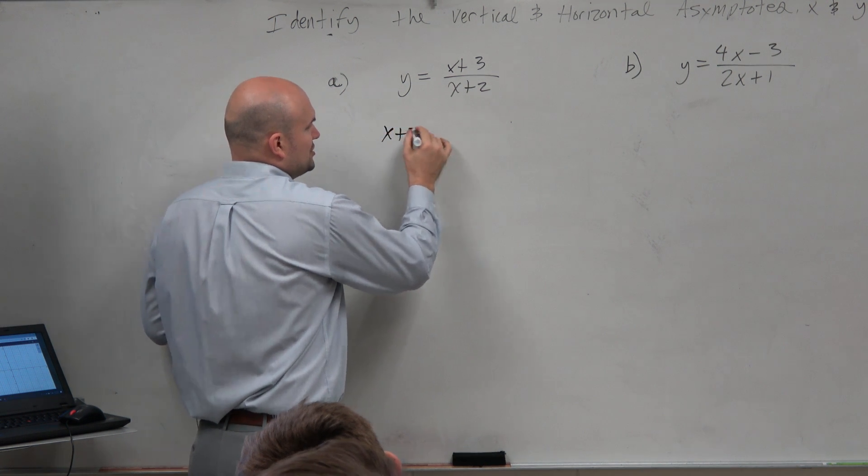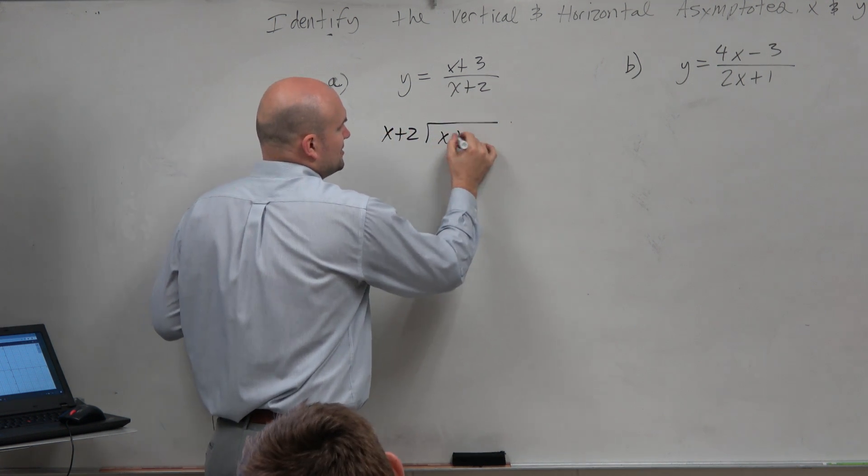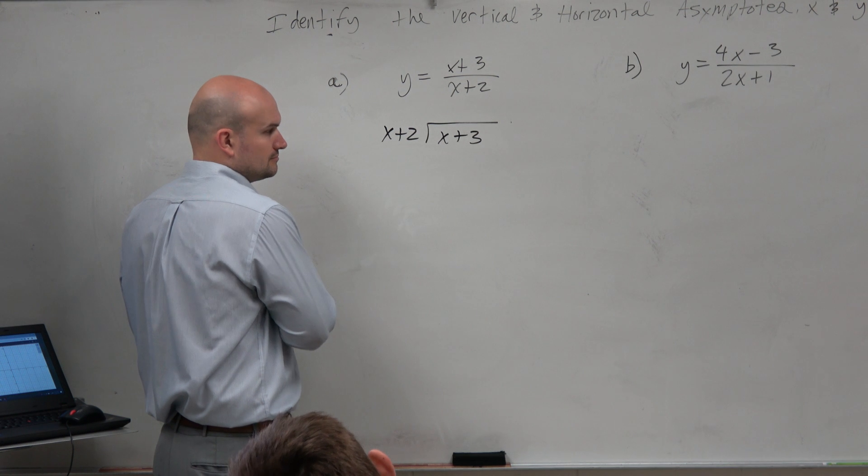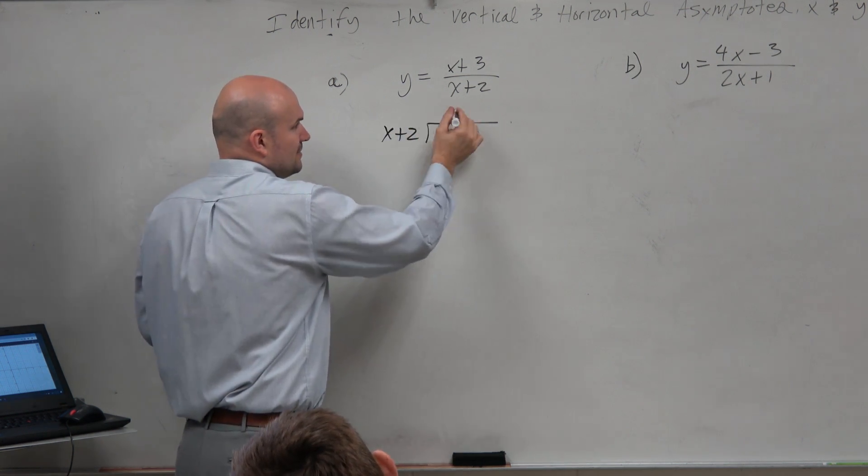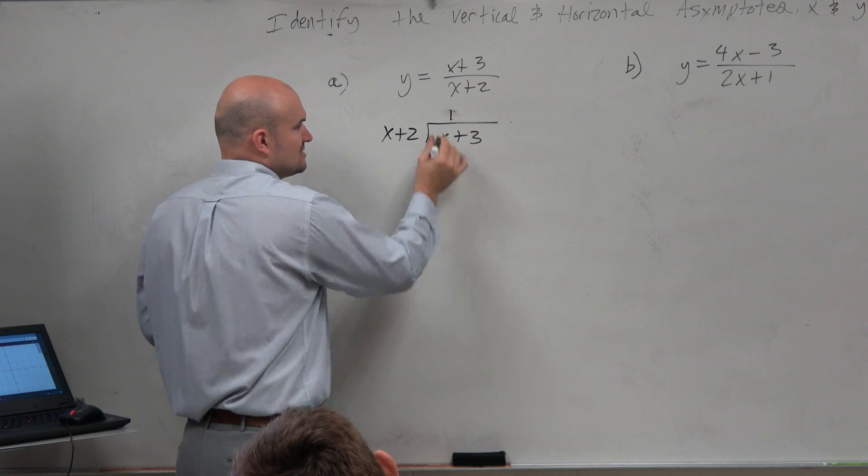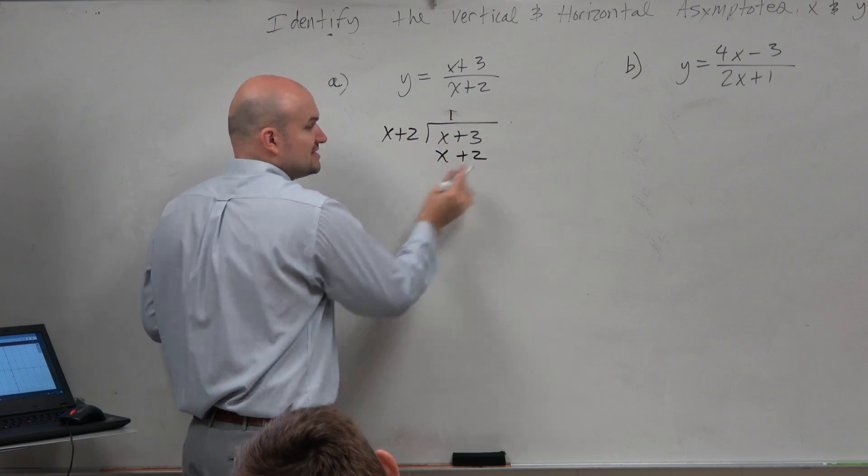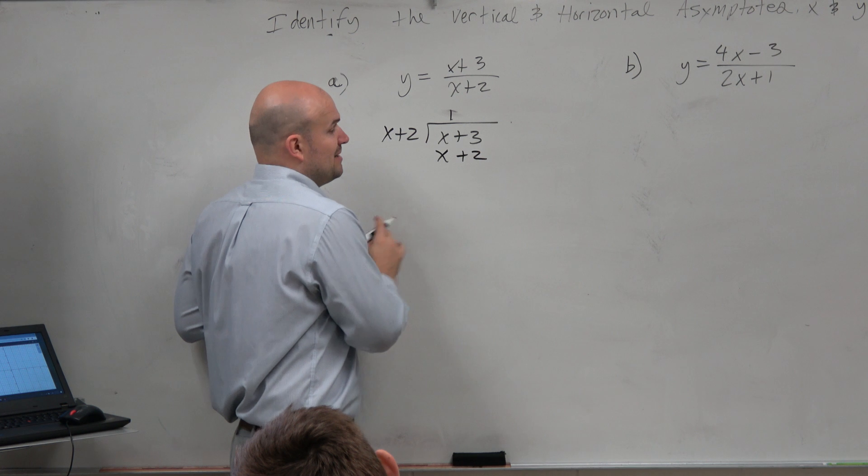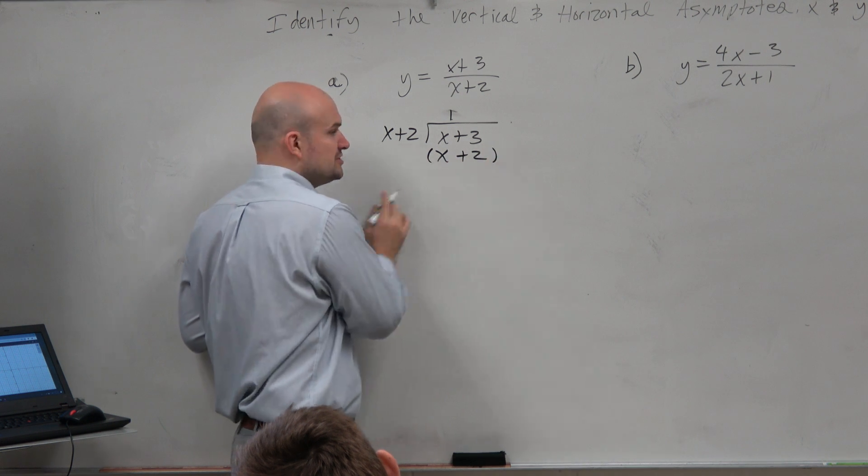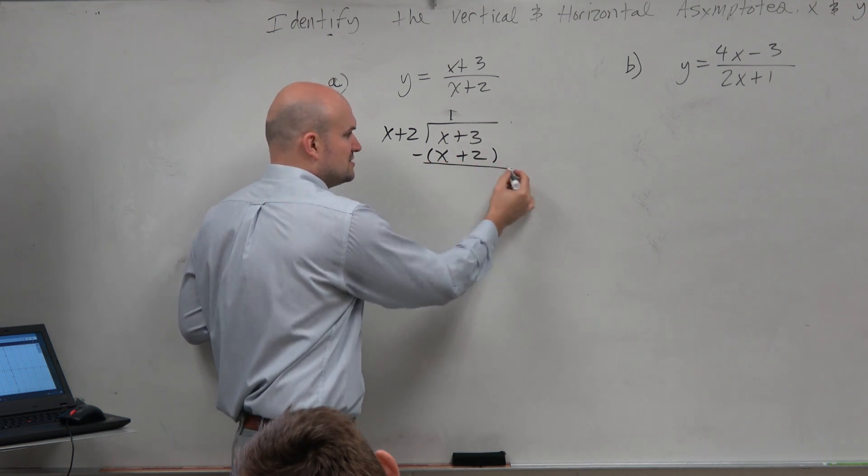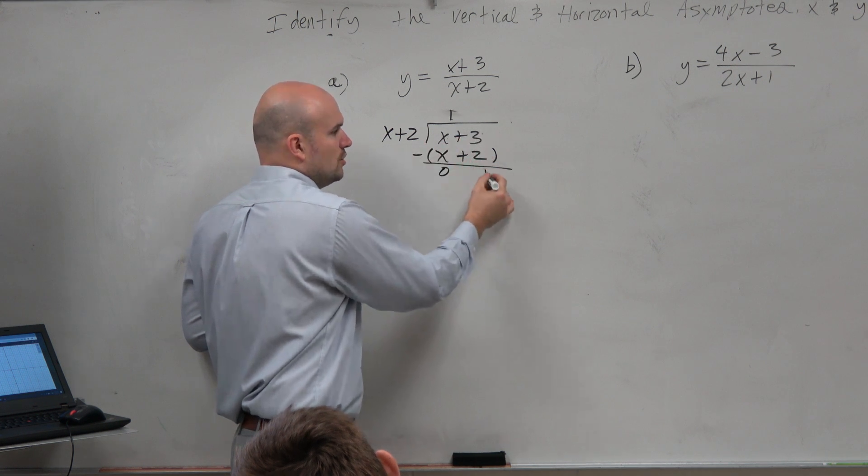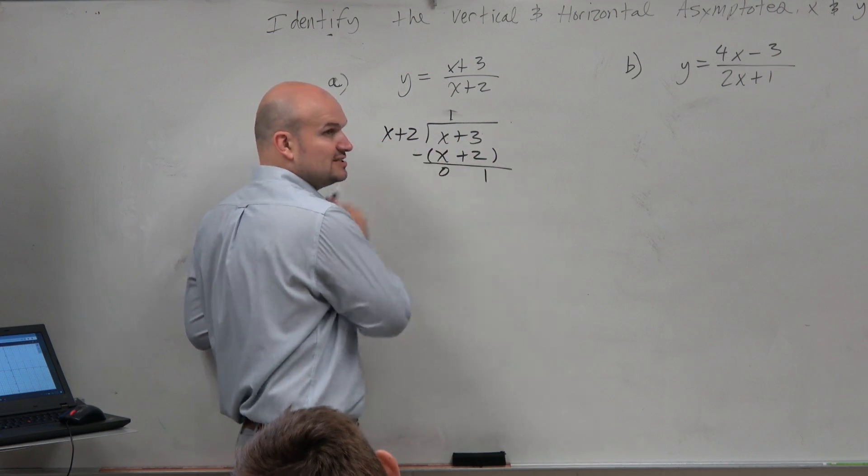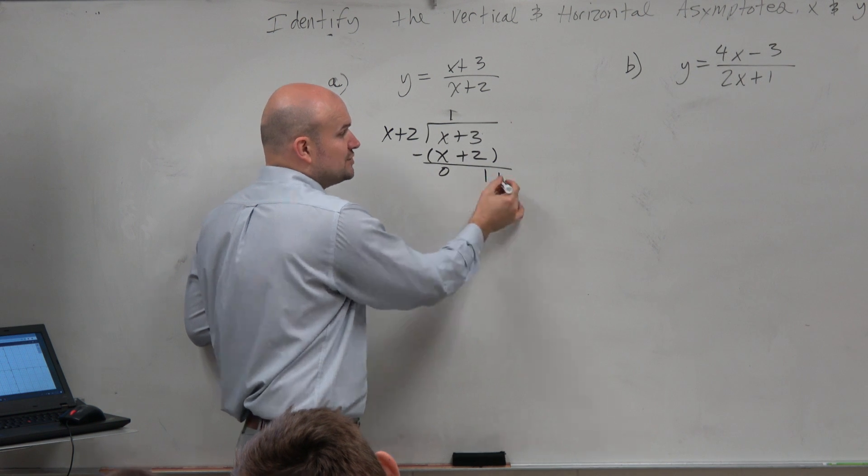So I'm just going to take x plus 2 divided into x plus 3. x divides into x one time. 1 times x is x. 1 times 2 is positive 2. Now, remember, a lot of people are making mistakes last class period. They weren't using parentheses and subtracting the rows. x minus x is 0. 3 minus 2 is 1. Does x divide into 1? No. So that is your remainder.